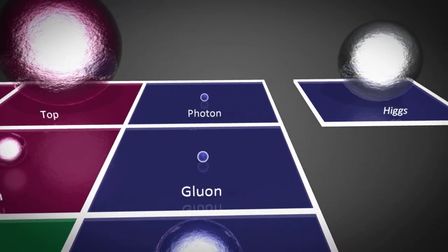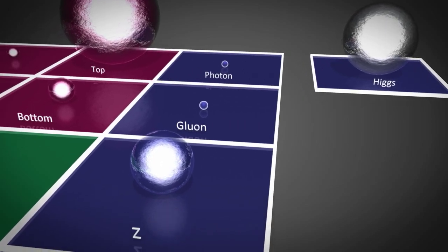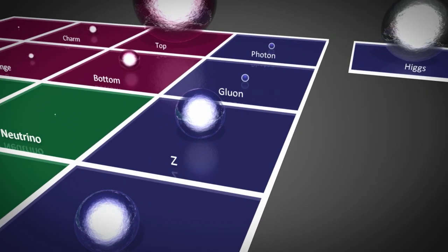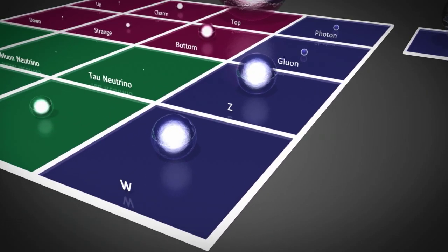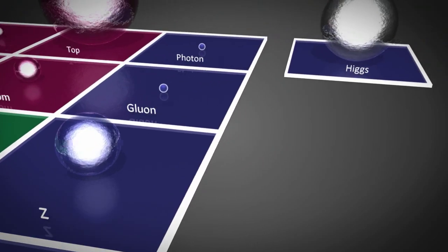The gauge bosons consist of the carrier particles for three of the fundamental forces of nature. These include the photon, the gluon, and the W and Z bosons. Finally, we come to the yet undiscovered Higgs boson.